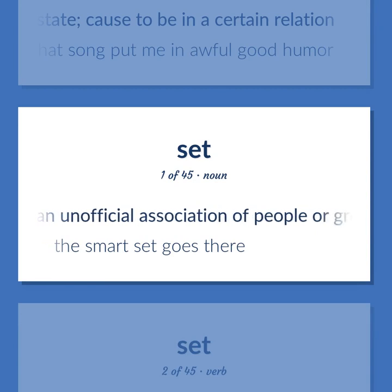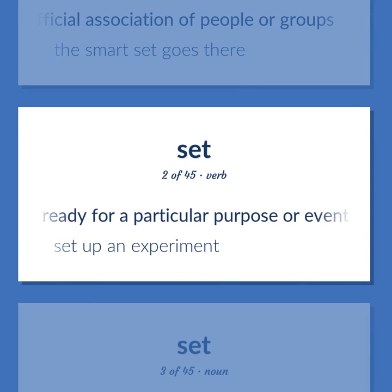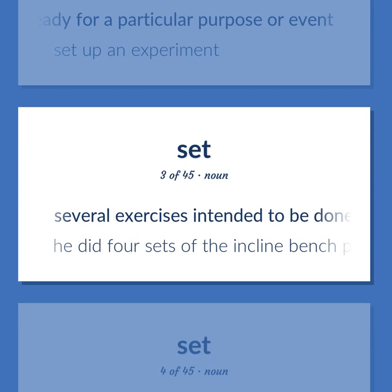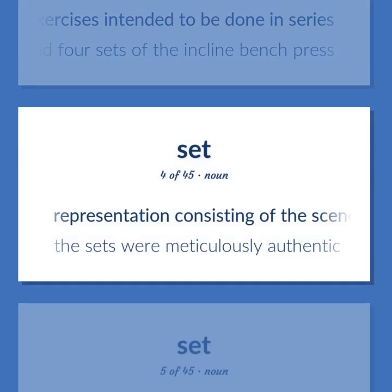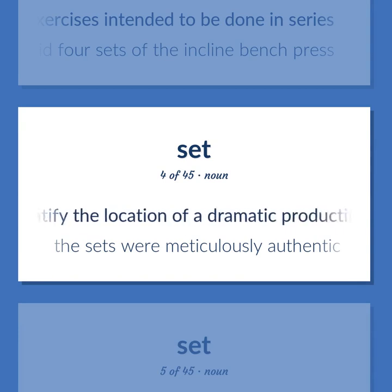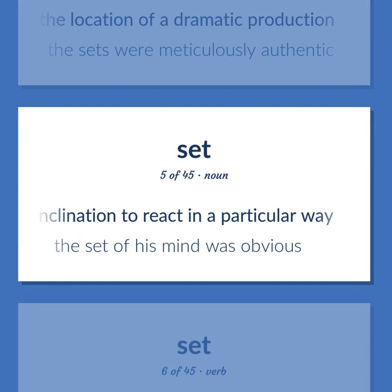Set. An unofficial association of people or groups. Example: The smart set goes there. Get ready for a particular purpose or event. Example: Set up an experiment. Several exercises intended to be done in series. Example: He did four sets of the incline bench press. Representation consisting of the scenery and other properties used to identify the location of a dramatic production. Example: The sets were meticulously authentic. A relatively permanent inclination to react in a particular way. Example: The set of his mind was obvious.